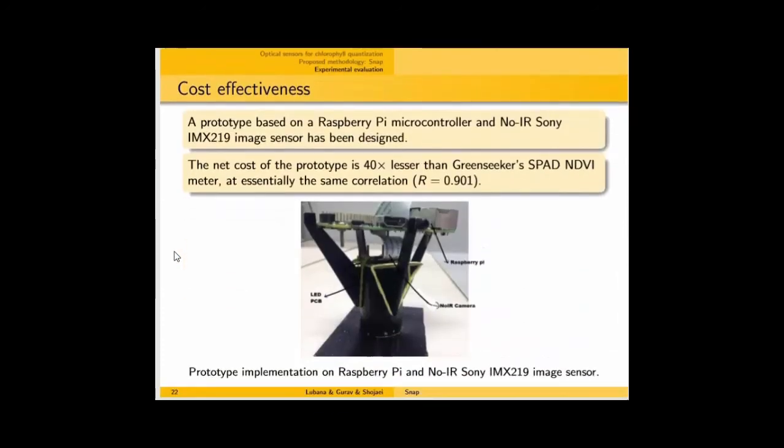Finally, our prototype was brought down to a microcontroller, which has the same correlation as that of the Nikon B70 camera. And it uses a Raspberry Pi and an OIR Sony AMX-19M sensor.